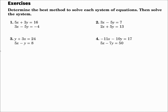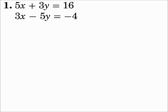Determine the best method to solve each system of equations, then solve the system. Number 1: 5x plus 3y equals 16, and 3x minus 5y equals negative 4. I'm not going to use graphing. Since none of the variables have a coefficient of 1, I won't use substitution. So I'm going to have to do elimination. The x's and y's don't have matching coefficients, so I'm going to use elimination with multiplication, and I'll eliminate the x's.